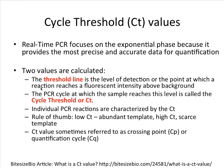Real-time PCR focuses on the exponential phase because it provides the most precise and accurate data for quantification. Two values are typically calculated: the threshold line, which may be calculated by the software or set manually, and the CT — the PCR cycle at which the sample reaches the threshold level. Individual PCR reactions become characterized by their CT value. As a rule of thumb, a sample with a low CT probably has quite abundant template, whereas a sample with a high CT — meaning the threshold is reached very late — probably means the template is quite scarce. The CT value is sometimes referred to as a crossing point or quantification cycle CQ, and these terms are often used interchangeably.